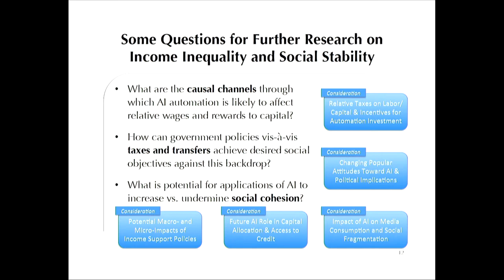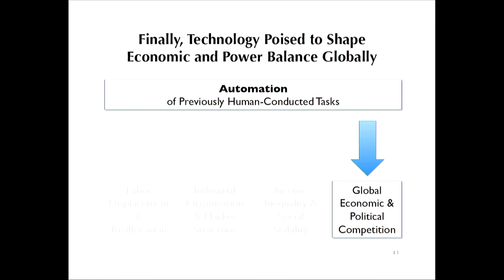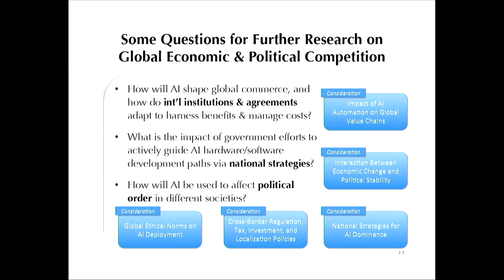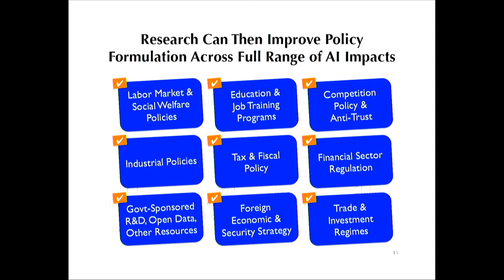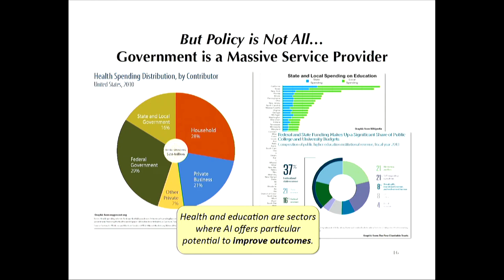Finally, AI is poised to challenge the rules of the game for international cooperation and competition. The research agenda here ranges from how global agreements need to adapt to AI-driven commerce to the impact on the political order and competition among nations. The answers from this research agenda have implications for the broad set of policies that government must get right in the AI era, but it is not just about policy. Government is also a massive service provider, accounting for more than one-third of our economy, and with an especially large role in health care and education. Government possesses the single most important resource in the era of deep learning: massive quantities of data.